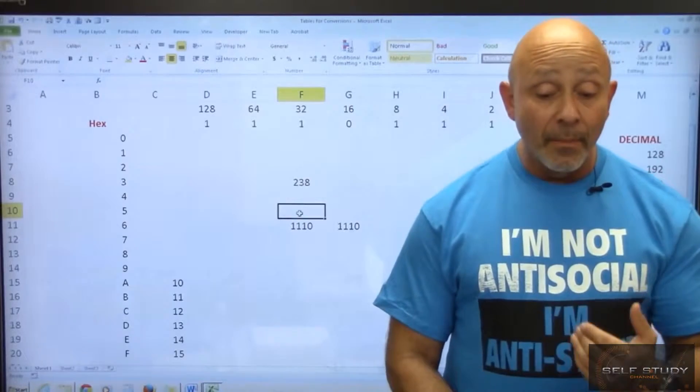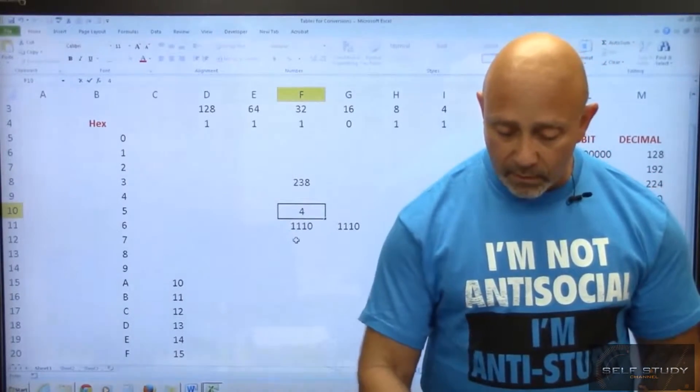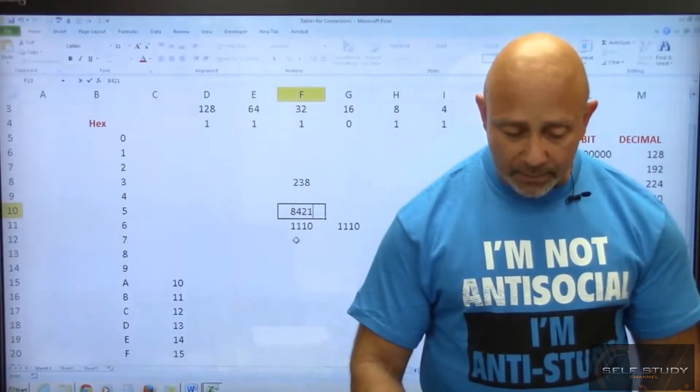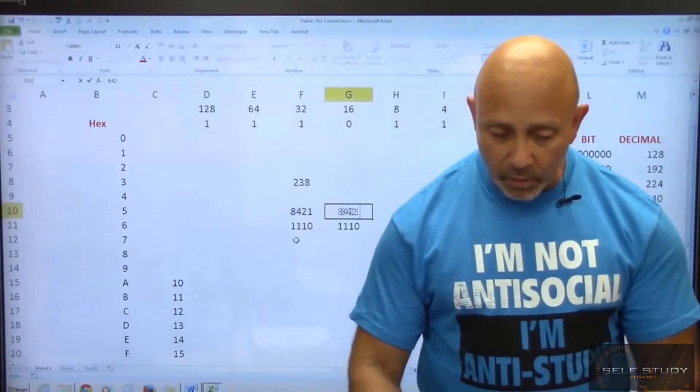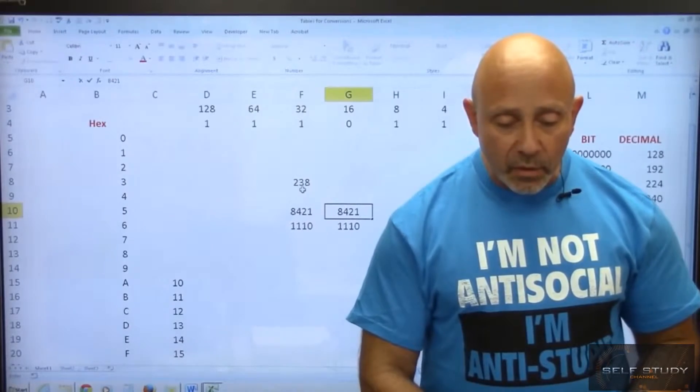So now the bit values are eight, four, two, one, eight, four, two, one. They're two separate numbers, because remember, each hex number is four bits long.